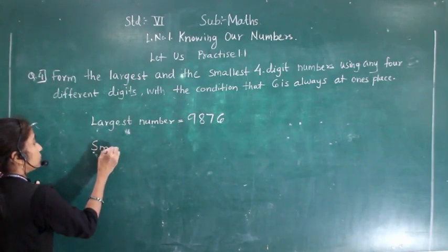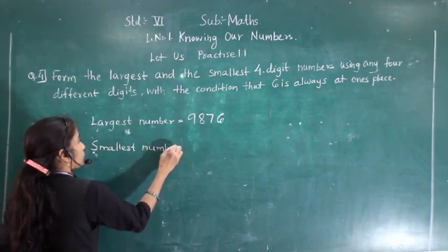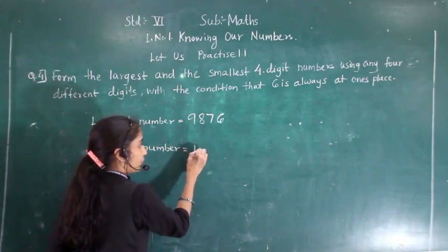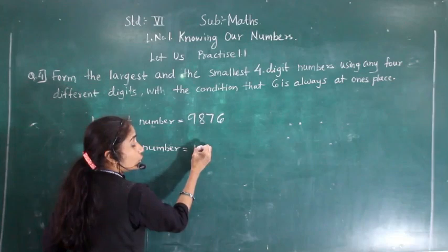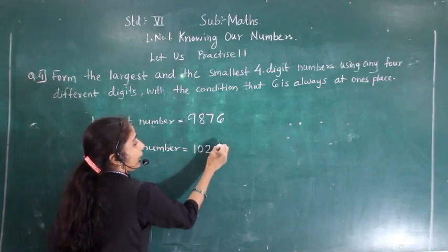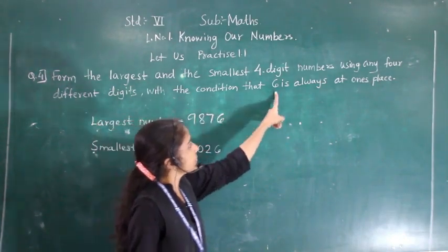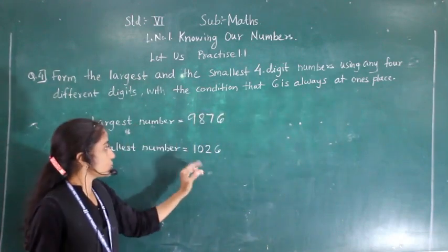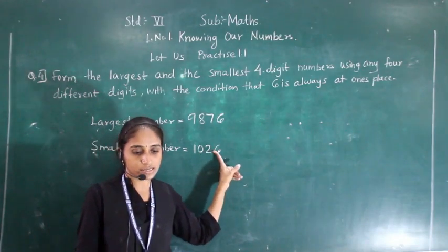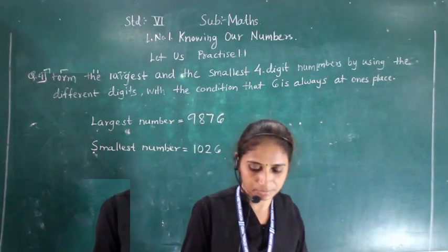Now for the smallest number: we will write 1 as the minimum, then 0, then 2, and 6 — because the given condition is that 6 is always at the ones place. So the smallest number is 1026.